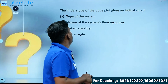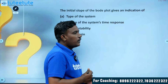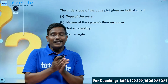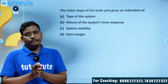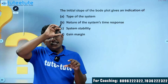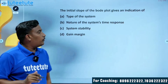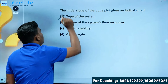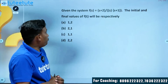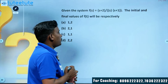Next question: the initial slope of the Bode plot gives an indication of what? While drawing the Bode plot, the first thing we observe is the type of the system. The initial slope of the Bode plot gives the type of the system. This is a direct question.